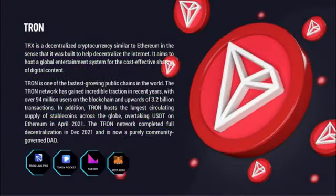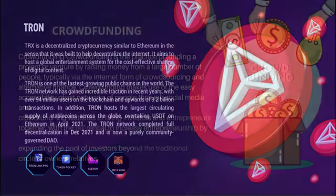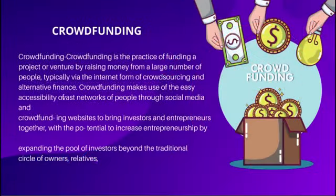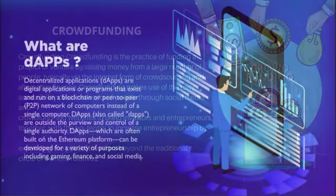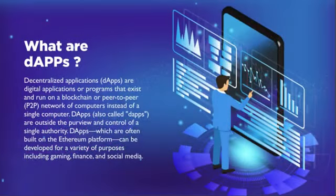TRX is a decentralized cryptocurrency similar to Ethereum in that it was built to help decentralize the market. Crowdfunding is the practice of funding a project by raising money from a large number of people, typically via the internet. DApps — decentralized applications — are digital applications or programs that exist and run on a blockchain or peer-to-peer (P2P) network of computers instead of a single computer.